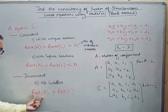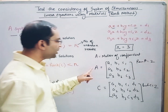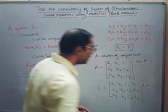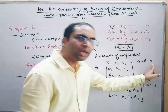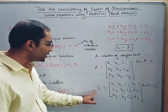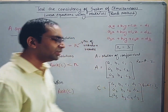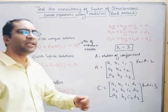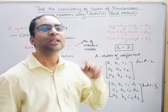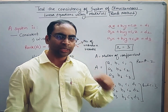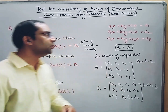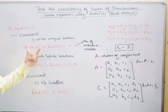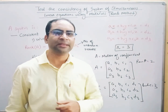Now let us arrive at the third case, where rank of A and rank of C do not match. Let us say rank of A is 2 but rank of C is 3. In that case rank of A is not equal to rank of C, and we say the system has no solutions — it is inconsistent. We will continue and see examples of all these cases one by one in the next coming lectures.